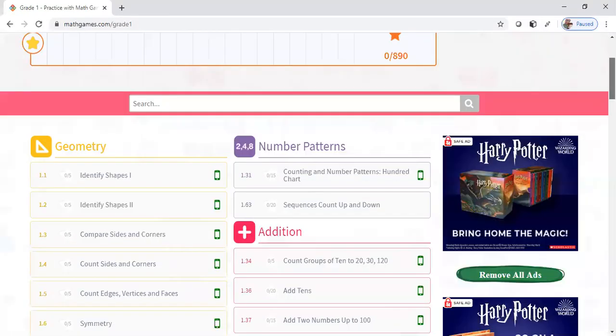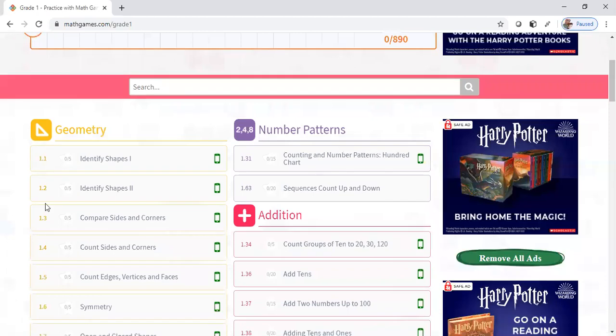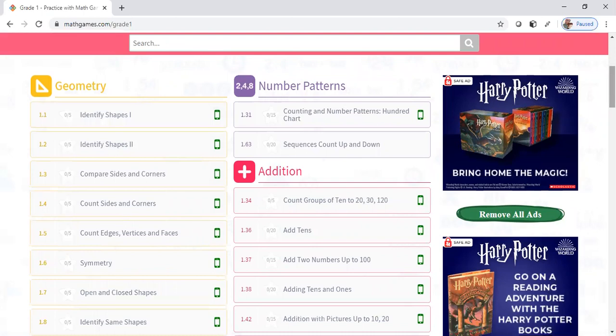As you can see, the numbers next to it—these are your standards. So anytime you're writing a lesson plan you can put that you use independent practice for mathgames.com as independent practice for your students, and you can also put the standard next to it.